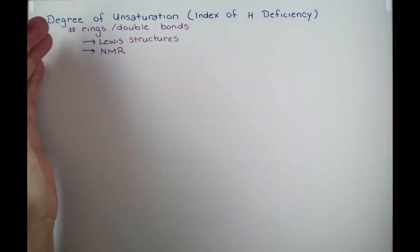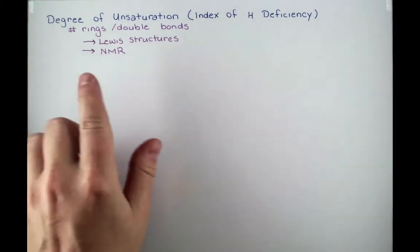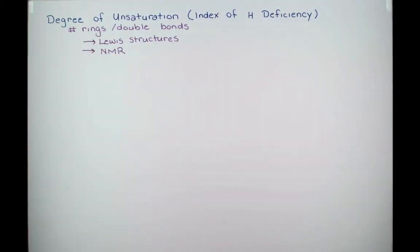Now knowing the number of rings and double bonds is going to help us out a lot when we try to draw Lewis structures. Also, when we look at NMR spectroscopy and we're given a formula but we don't know what the compound is, it's great to get a quick idea of how many double bonds and rings might be in your structure.